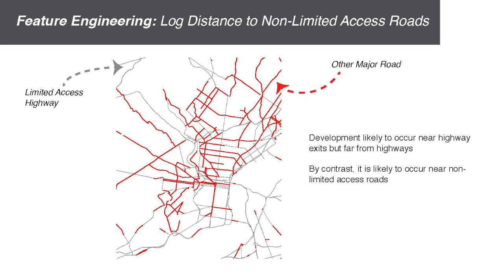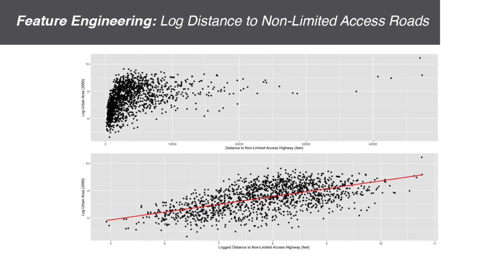I included multiple variables that operationalize the relationship between urbanization and proximity to roads. In the case of limited access highways, one would be inclined to develop near exits but far from other portions of the road. Development is likely to occur near all portions of non-limited access major roads.